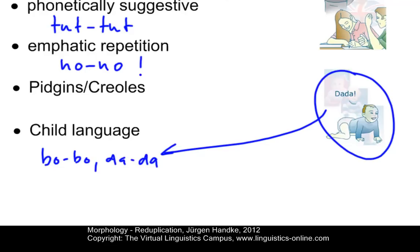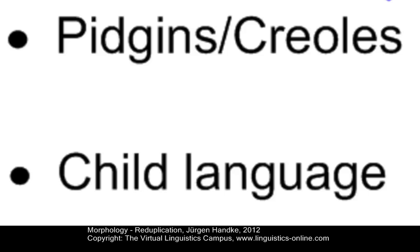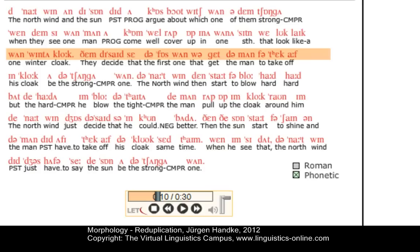Let's now come back to the case of pidgins and creoles. Of course, the question is whether this is really a variety of present-day English or not — we will discuss this in another video on language, dialect, and variety. Here is an example of Jamaican Creole from the VLC Language Index: a speaker of the basilectal variety from Portmore, a district in the southeast of Jamaica.